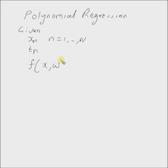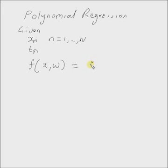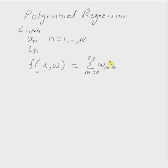...w is given by the polynomial function defined as follows: the summation from m equals zero to capital M of w_m times x to the power m. Here, capital M is the degree of the polynomial.